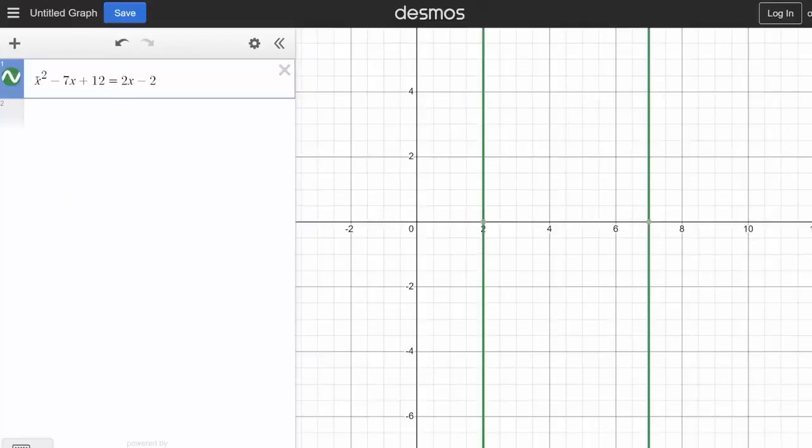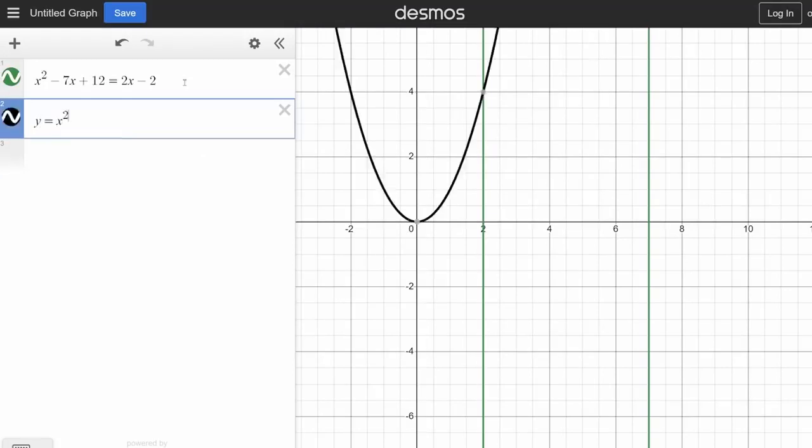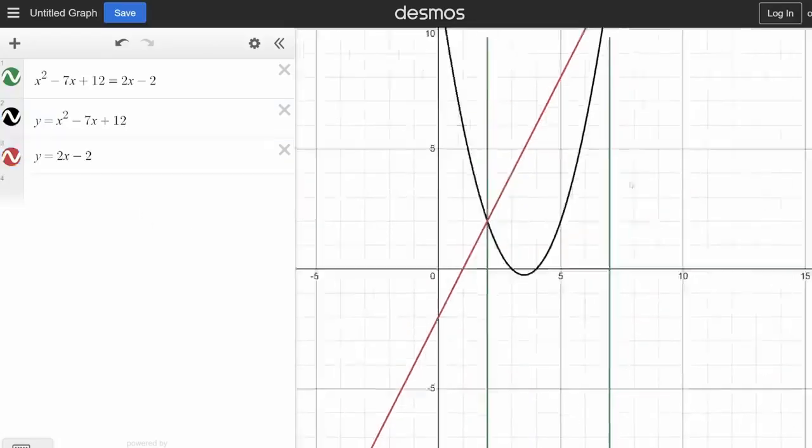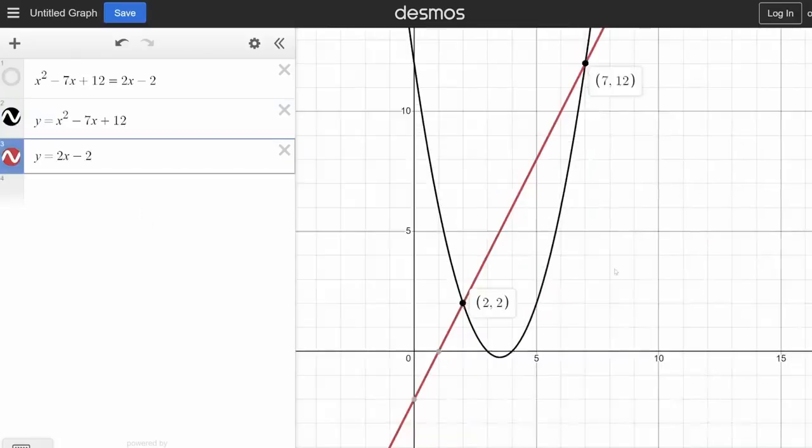Now, you may realize that every single variable equation can be rewritten as a system of equations, and vice versa. For example, let's say we have this single variable equation right here, with solutions 2 and 7. If we wanted to express this as a system, you can set y equal to the left side of the equation, and y equal to the right side of the equation. Notice that the quadratic and the line intersect at x equals 2 and x equals 7, which were our two solutions.